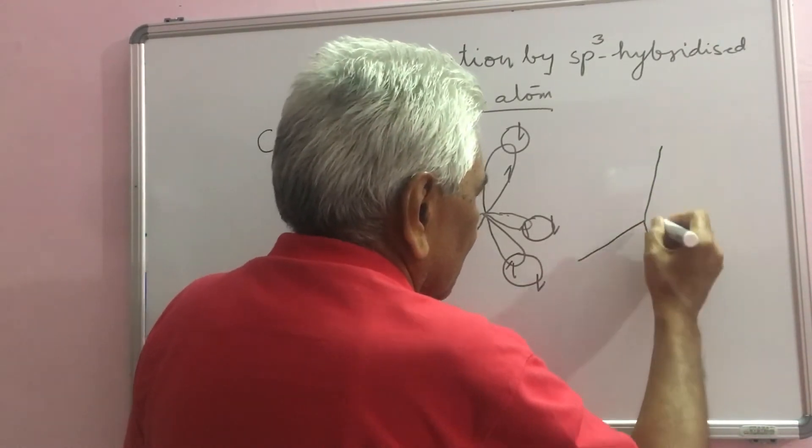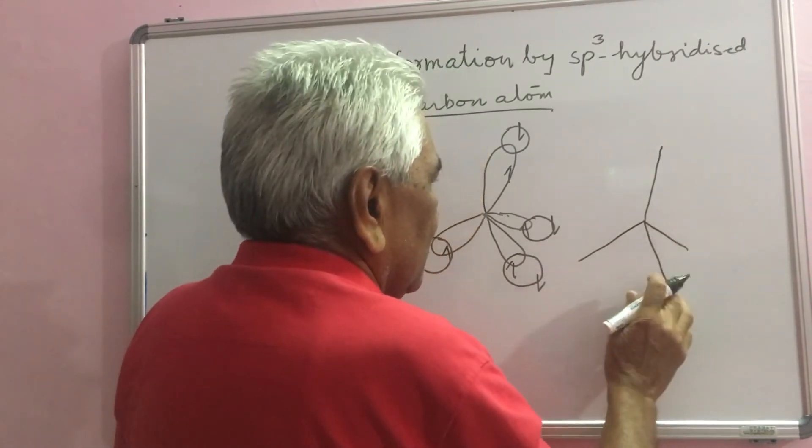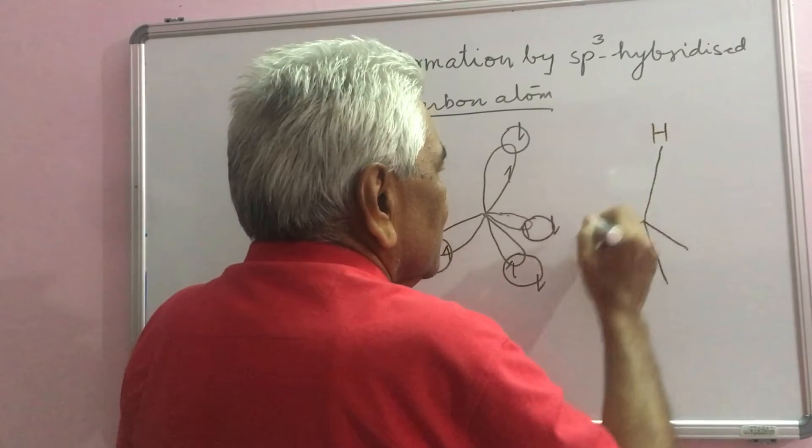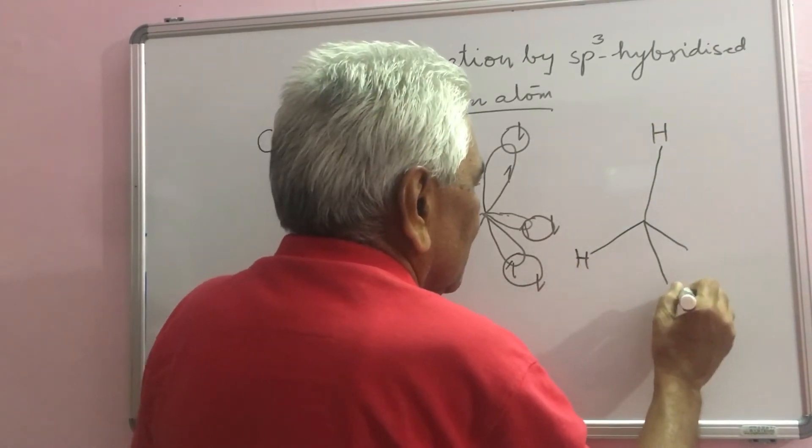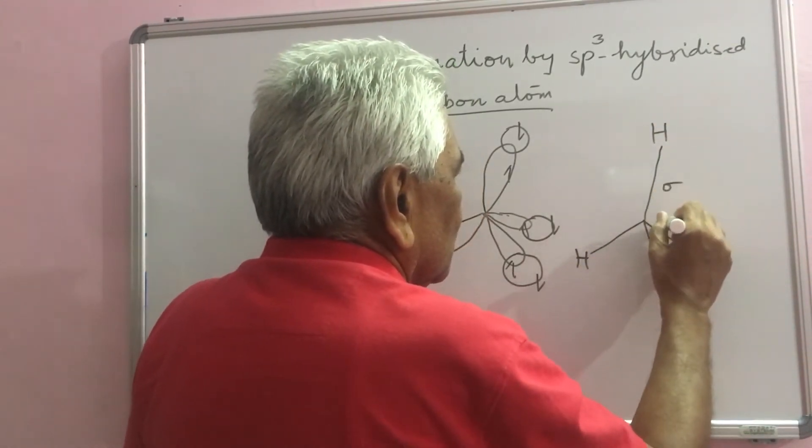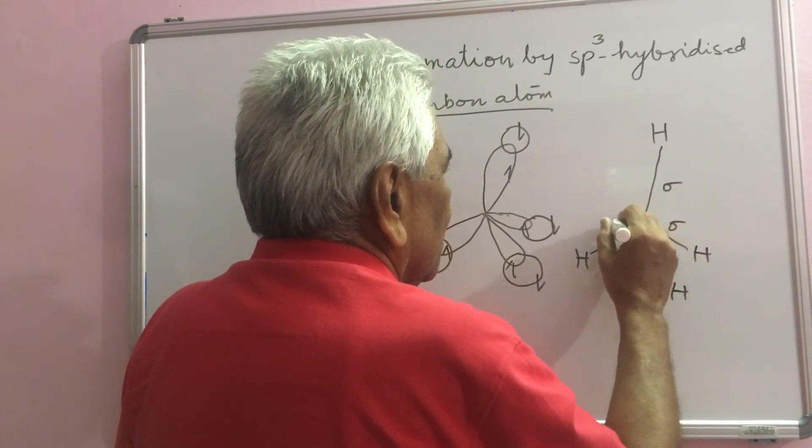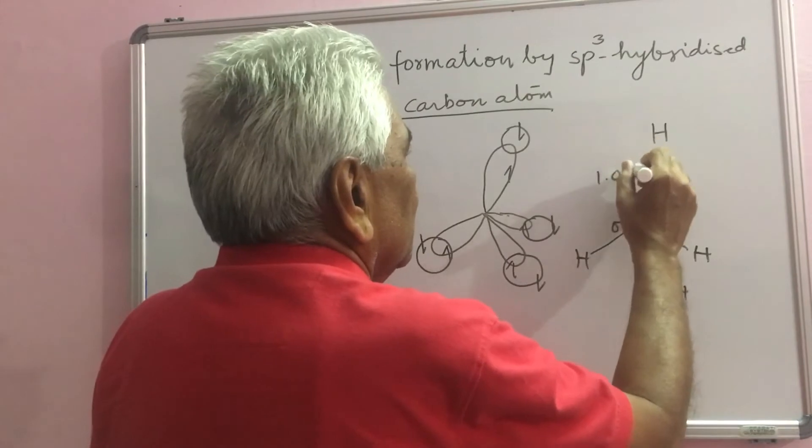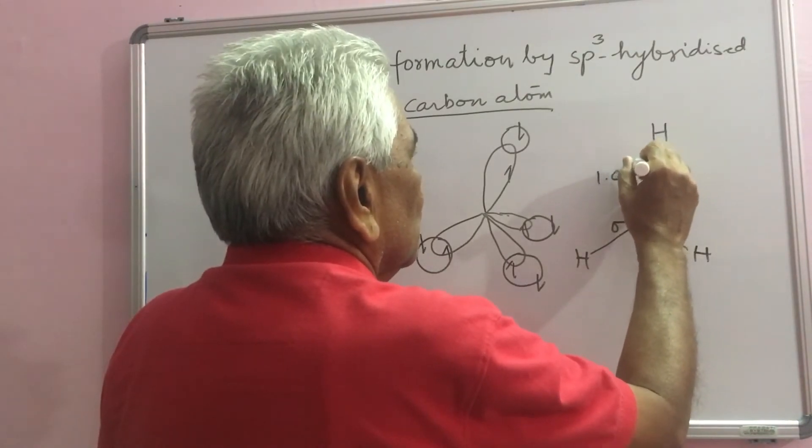If this can be presented as this: 4 sigma bonds, 1.09 angstrom units.